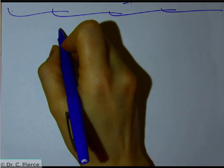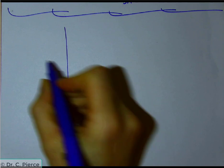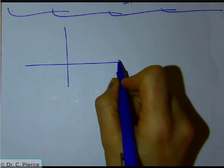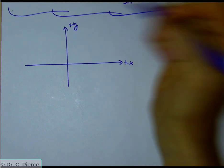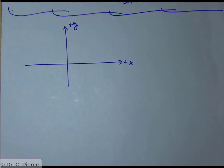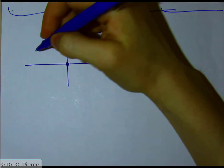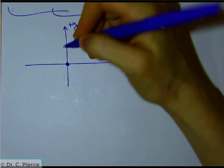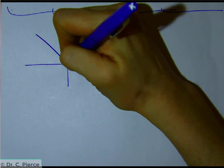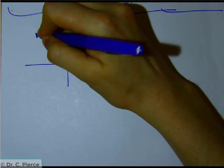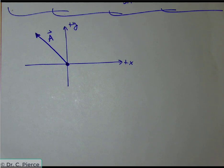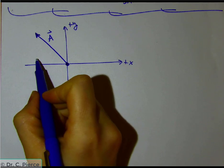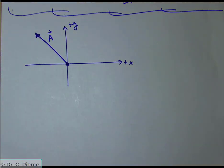I'm going to draw a default coordinate system where the positive x is pointing to the right, the positive y direction is upwards, and I'll draw a vector on here. I'll choose to have it start at the origin and point in this direction. I'll call it vector a. Since it's pointing leftward and upward, it can get pretty complicated.